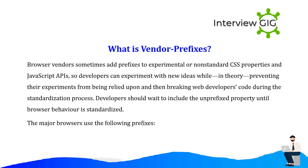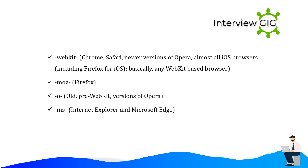What are vendor prefixes? Browser vendors sometimes add prefixes to experimental or non-standard CSS properties so developers can experiment with new ideas while, in theory, preventing their experiments from breaking web developers' code during the standardization process. Developers should wait to include the unprefixed property until browser behavior is standardized. The major browsers use the following prefixes: -webkit- (Chrome, Safari, newer versions of Opera, almost all iOS browsers including Firefox for iOS — basically any WebKit-based browser); -moz- (Firefox); -o- (old, pre-WebKit versions of Opera); -ms- (Internet Explorer and Microsoft Edge).